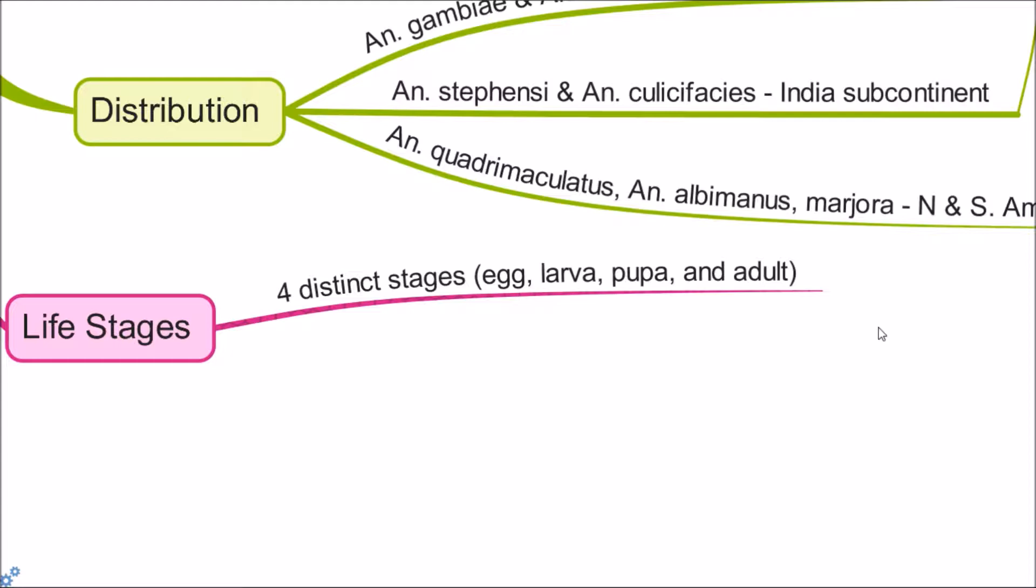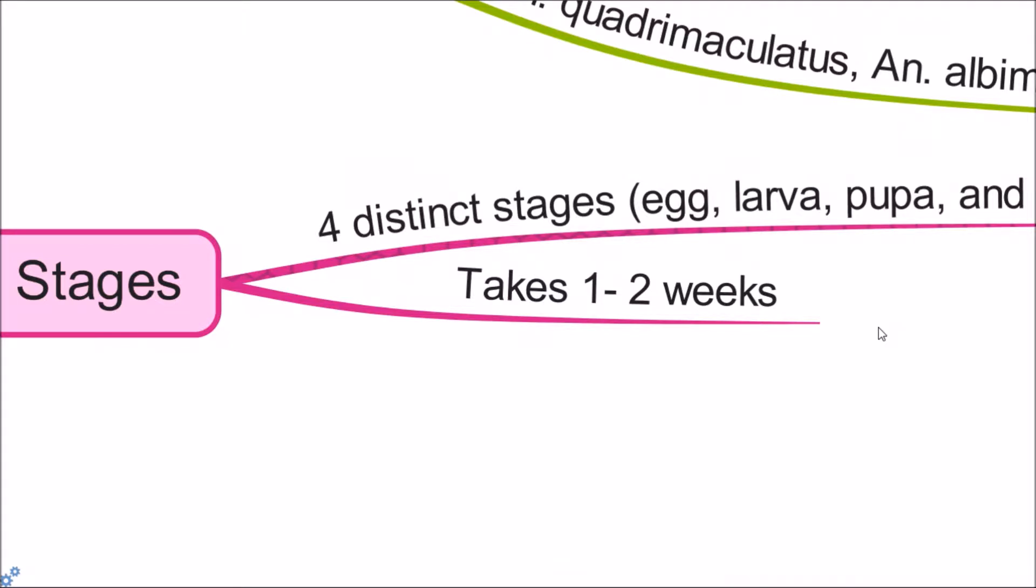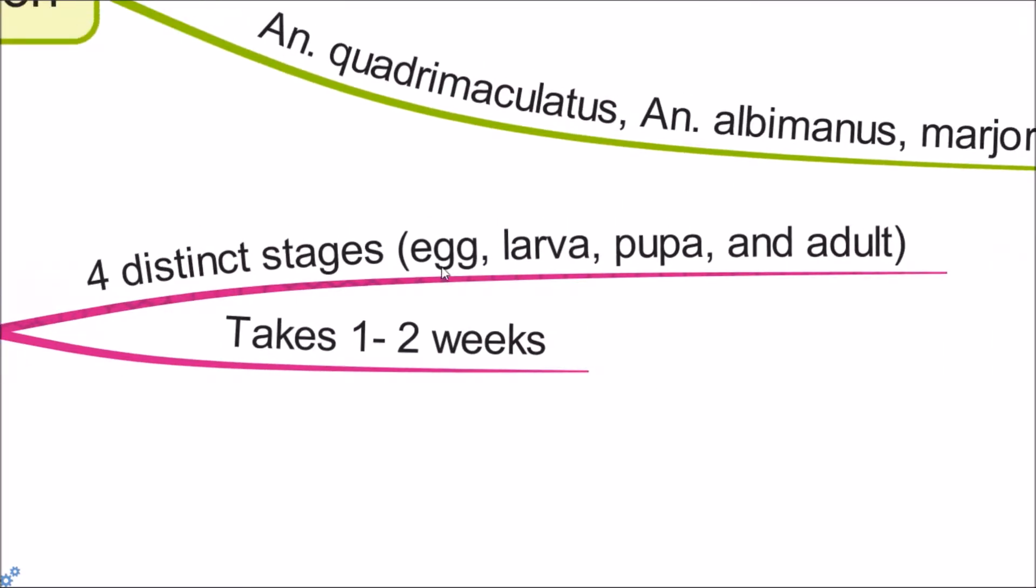Anopheles eggs are deposited and larvae and pupae develop into adulthood, a process that takes approximately one to two weeks. The first stages - egg, larvae, and pupae - are aquatic, while the adult stage is when the female Anopheles mosquitoes act as malaria vectors.